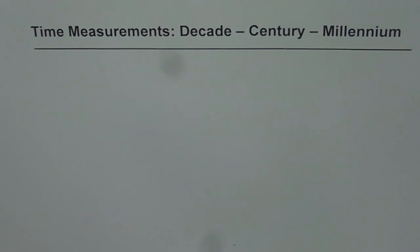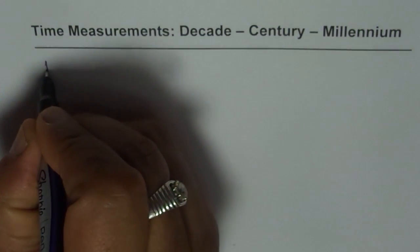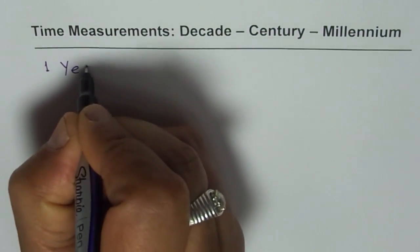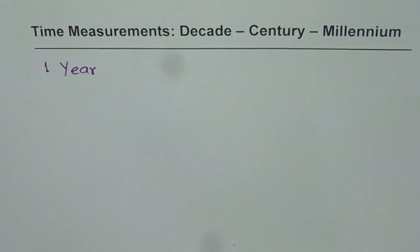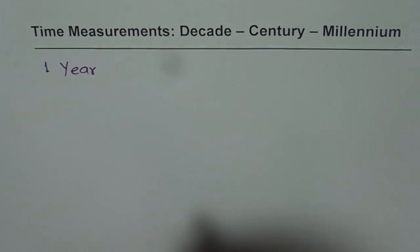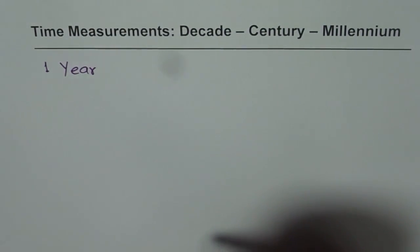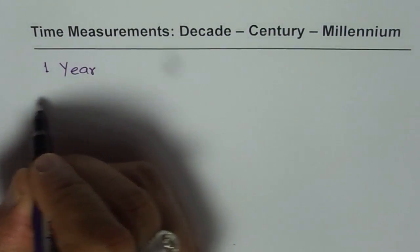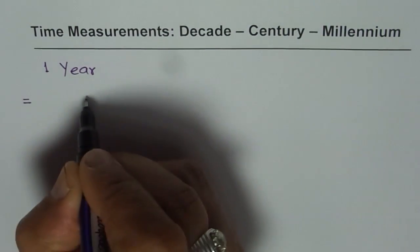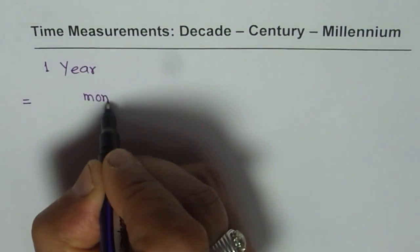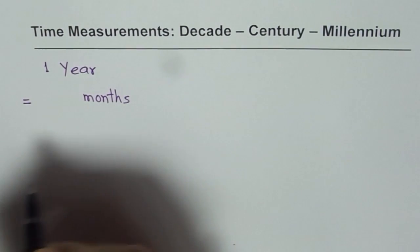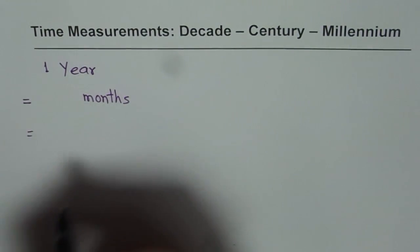Let's start with year. You know one year. Now one year has how many months? Let's start with that and then we'll figure out decade, century and millennium. One year has how many months? So we'll write one year equals to how many months? Well you know it, it is 12 months.